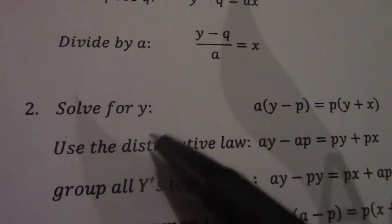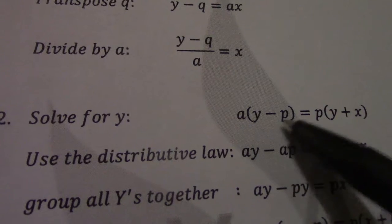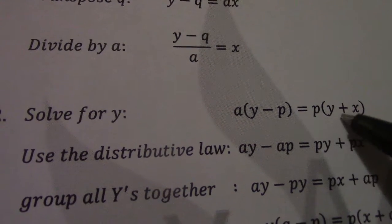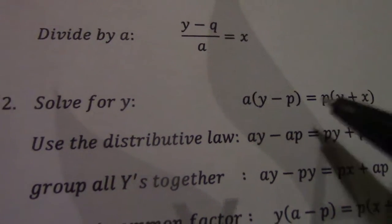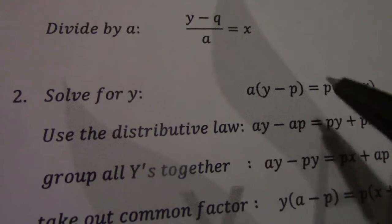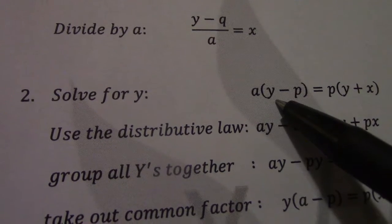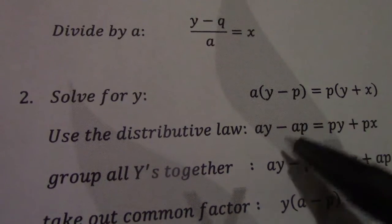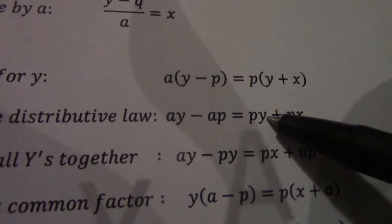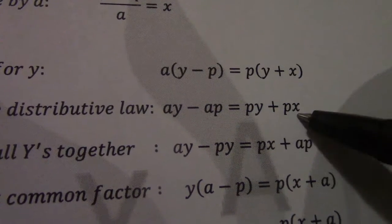Question 2, solve for y. So they have given you a y minus p equal p times y plus x. So first we are required to use the distributive law and multiply out because I have y on both sides. So they have a y. A times negative p becomes negative ap. P times y becomes py. P times x becomes px.